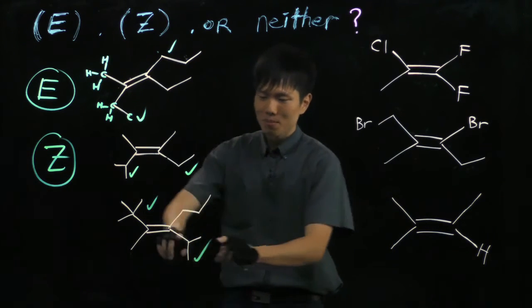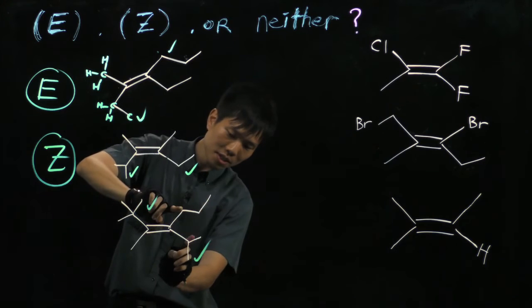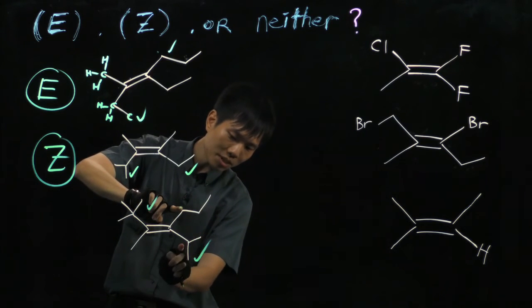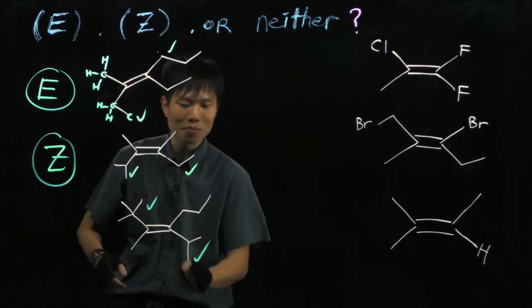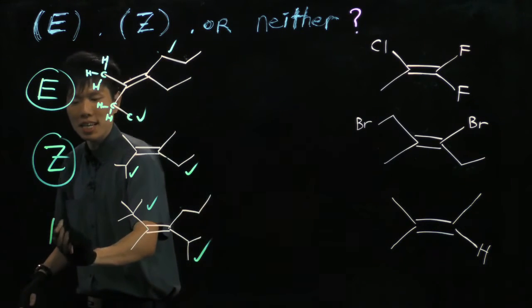this is the one that wins because you go carbon. The bottom one has two carbons connected to it, whereas the top one only has one carbon. So this guy beats the top. Opposite, that must be E.